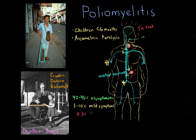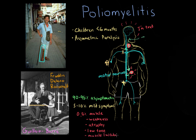Only about half a percent of people acutely infected by the virus experience muscle symptoms. These may include weakness, atrophy — where muscles shrivel up due to disuse since the motor neurons are damaged — low muscle tone, and muscle twitching, which can occur from abnormal firing by neurons that may still be providing some innervation to the muscles.